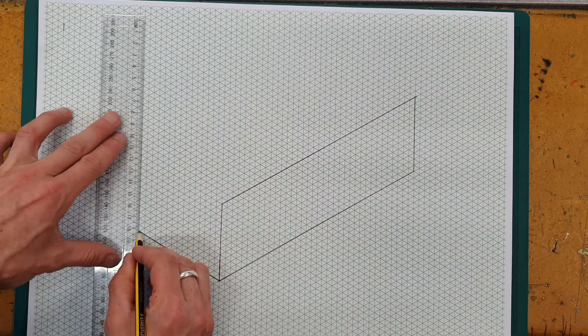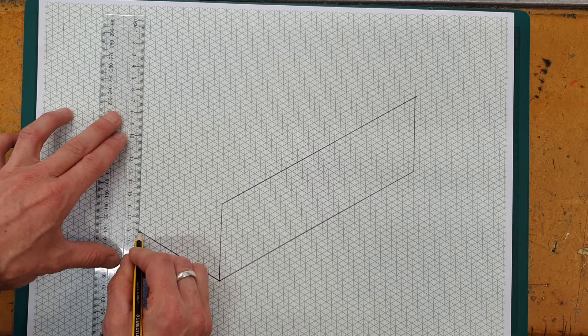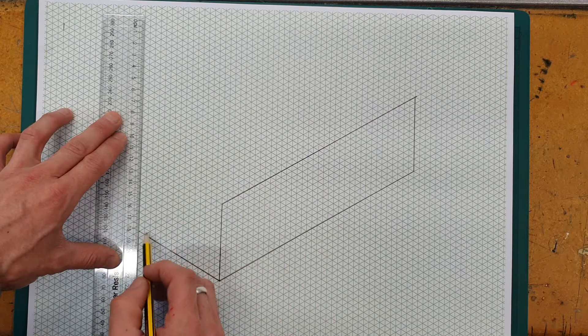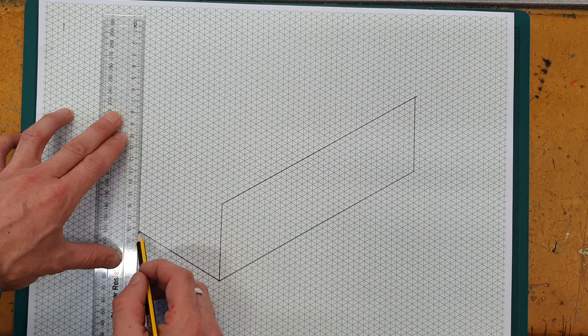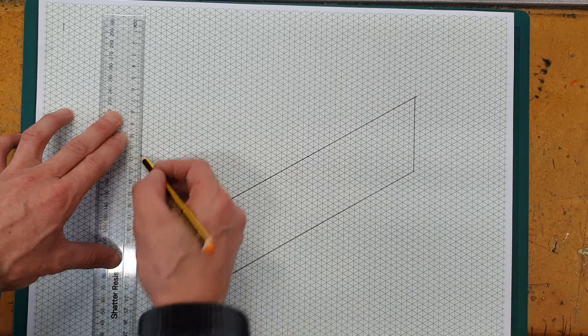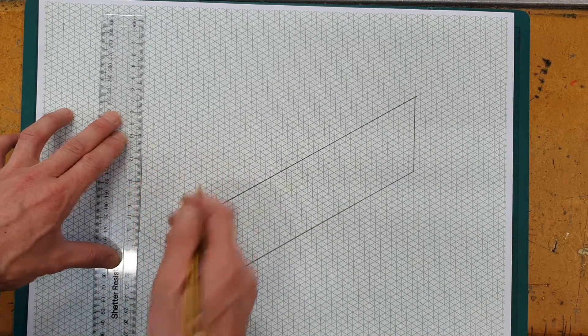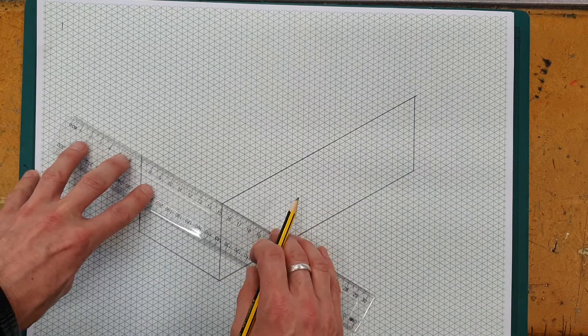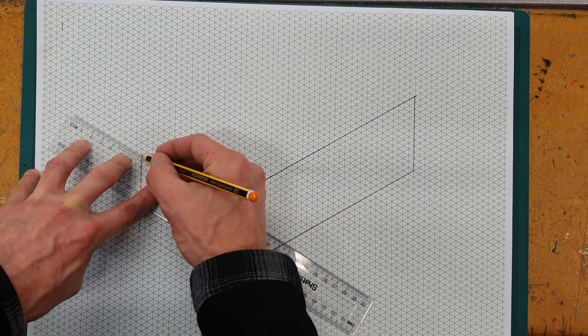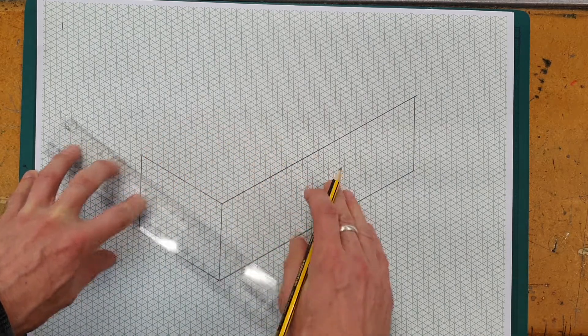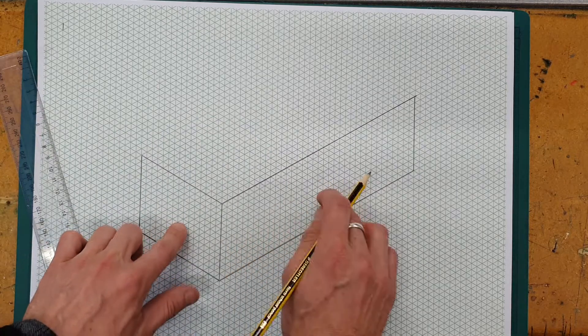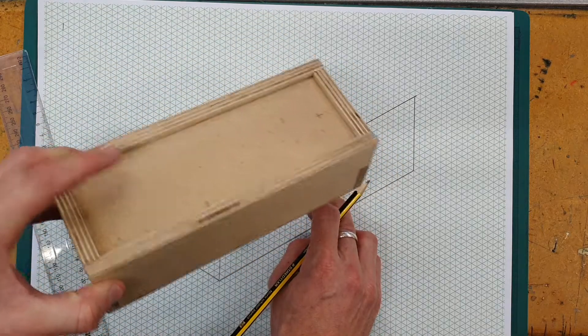Once you have one line measured, things get a bit easier, or I hope. So we're just going to take this line up from where we finished it, and it needs to be in line with that one there. And we just bring it back around to where we started. So now we've got two dimensions of the box, and we need just to put the top on.